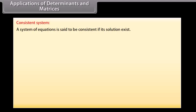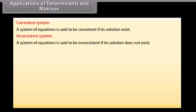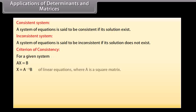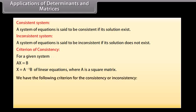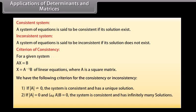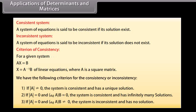Applications of determinants and matrices: a system of equations is said to be consistent if its solution exists, and inconsistent if its solution does not exist. Criterion of consistency: for the system AX equals B, if det(A) is not equal to 0, the system is consistent with a unique solution. If det(A) equals 0 and adj(A)·B equals 0, the system is consistent with infinitely many solutions. If det(A) equals 0 and adj(A)·B is not equal to 0, the system is inconsistent and has no solution.